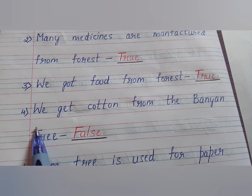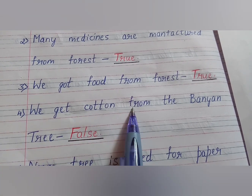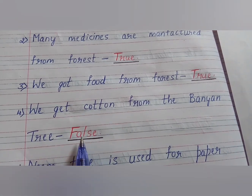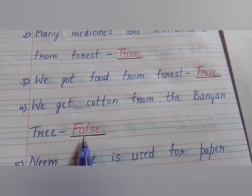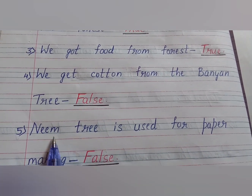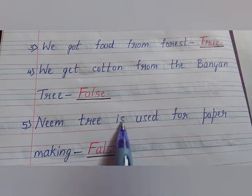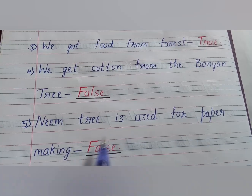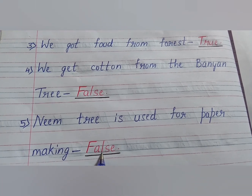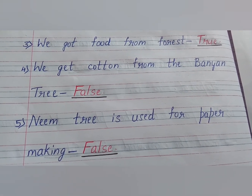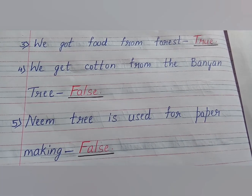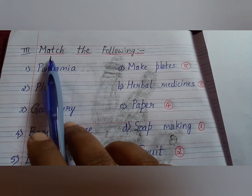Fourth question: we get cotton from the banyan tree. No, it is false. Fifth question: neem tree is used for paper making. Is it, children? No, that statement is false.